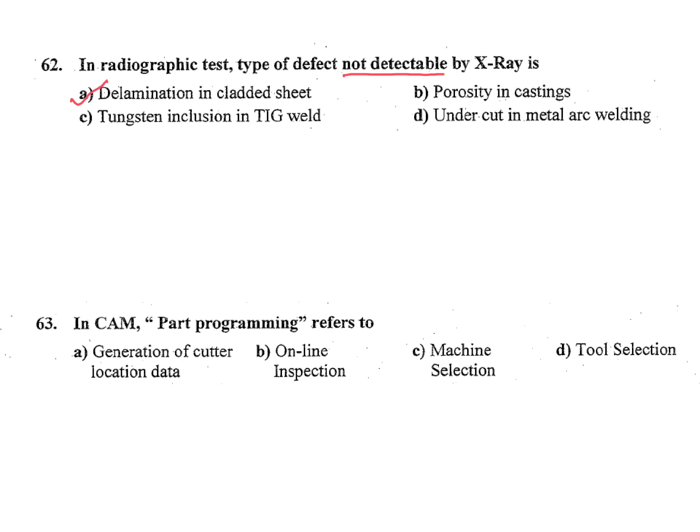In CAM, part programming refers to computer-aided manufacturing CAM. A generation of cutter location data, B online inspection, C machine selection, D tool selection. Generation of cutter location data, A.